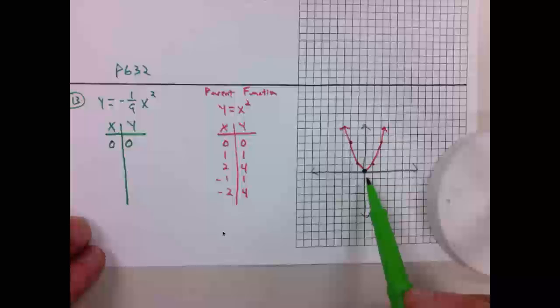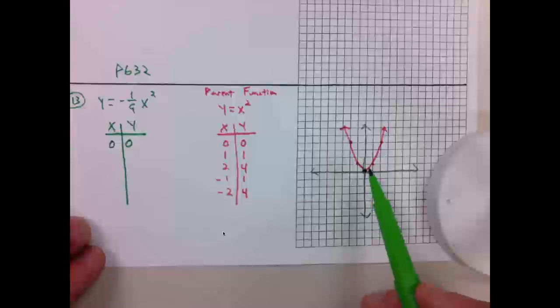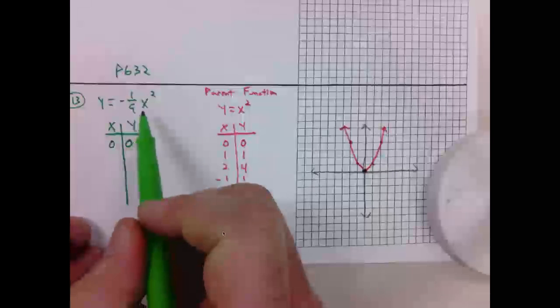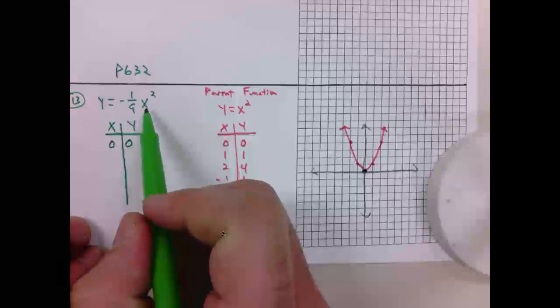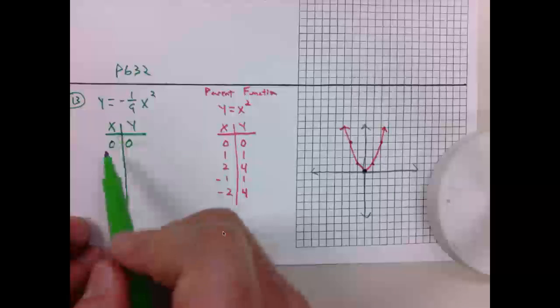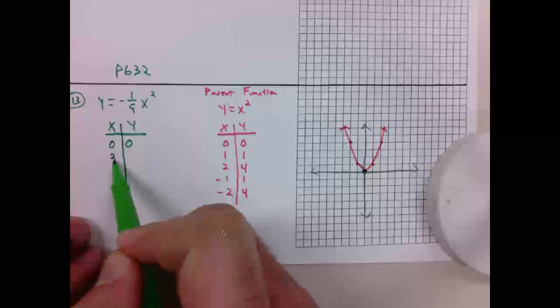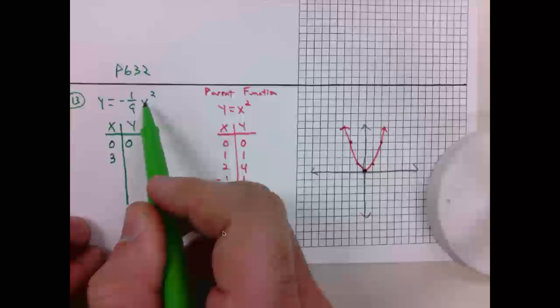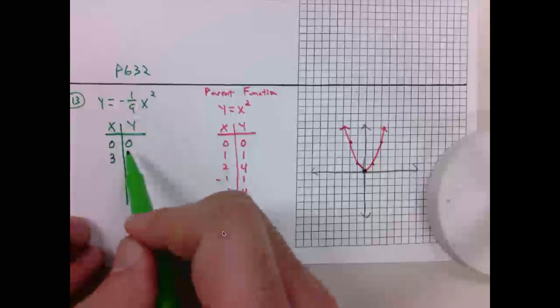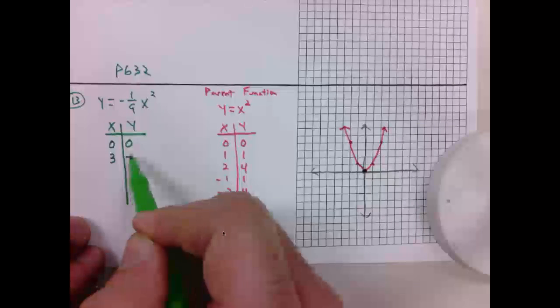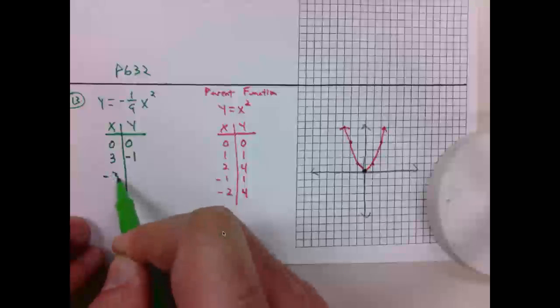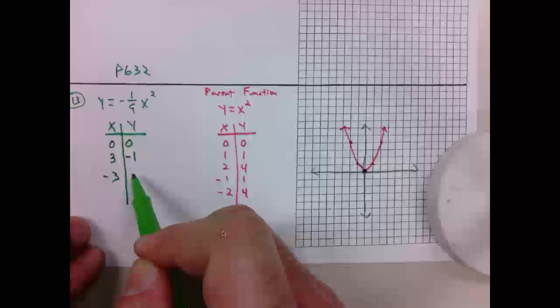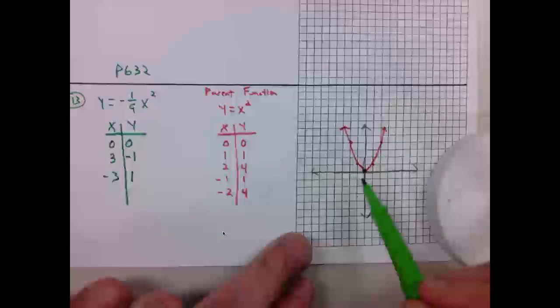Instead of using 1, I'm going to use positive 3 because 3 squared is 9 and 9 times negative 1/9 will be negative 1. Likewise, negative 3 will pair with positive 1. So let's look at those points.